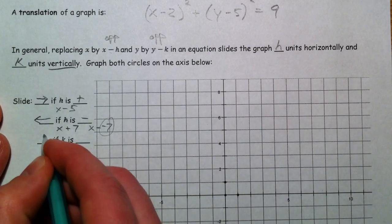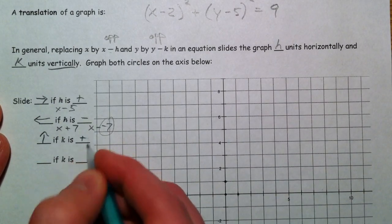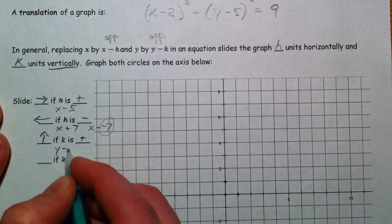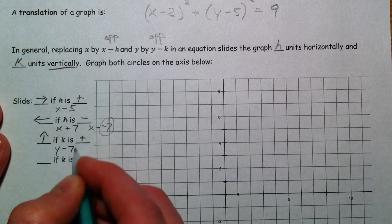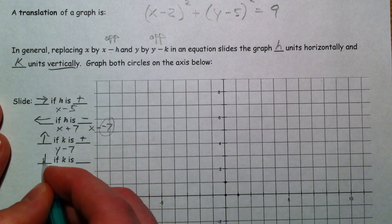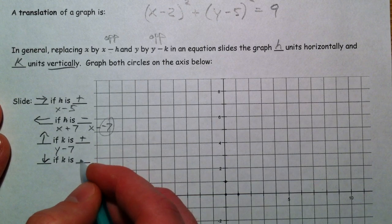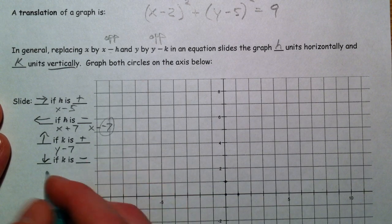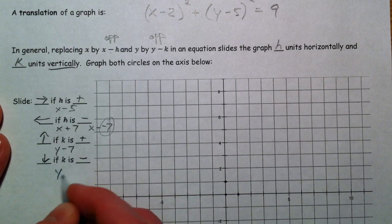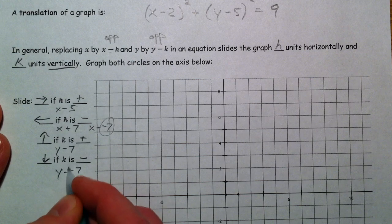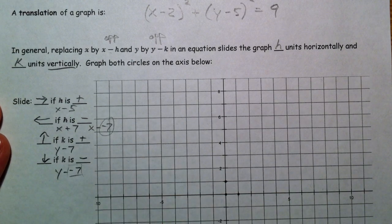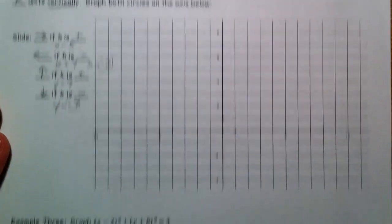If k is positive, you slide up. So y minus 7, y minus k, k is the 7. And shift it down if k is negative. Like y minus a negative 7. And so that's your k being negative. Alright. So.